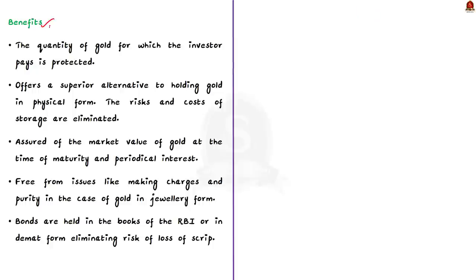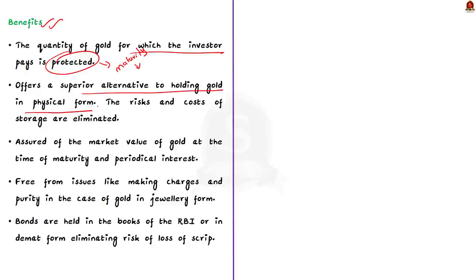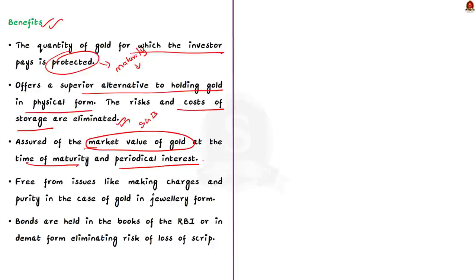These bonds come with certain benefits. First, the quantity of gold for which the investor pays is protected — the investor will receive the ongoing market price at the time of redemption. Second, the Sovereign Gold Bond offers a superior alternative to holding gold in physical form — the risks associated with physical gold and the cost of storage are eliminated. Third, investors are assured of the market value of gold at the time of maturity and additionally get a periodical interest of 2.5% per annum.